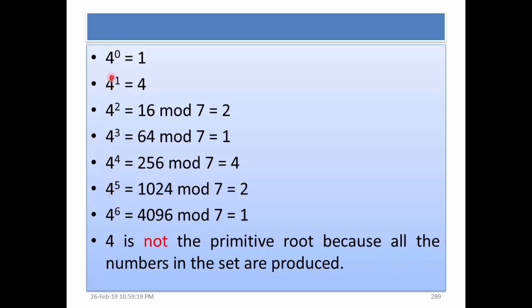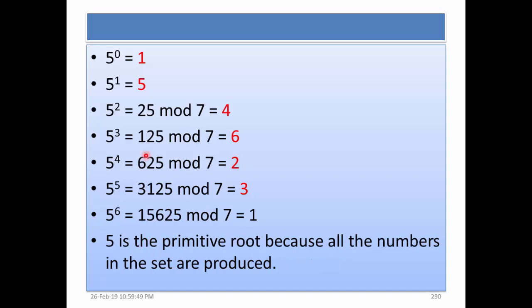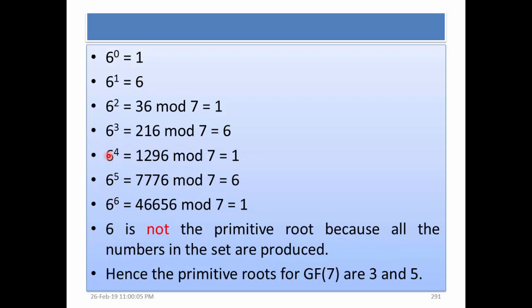Now we test 4 using the same method and we again see that 4 is not the primitive root because all the numbers in the set are not produced. For 5 we can see that it is a primitive root because 1, 2, 3, 4, 5, 6 — all numbers have been produced while raising the power of 5 from 0 to 6. And 6 is also not the primitive root. So for GF(7), 3 and 5 are the primitive roots.